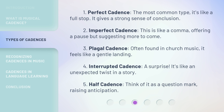3. Plagal Cadence: Often found in church music, it feels like a gentle landing. 4. Interrupted Cadence: A surprise — it's like an unexpected twist in a story. 5. Half Cadence: Think of it as a question mark, raising anticipation.